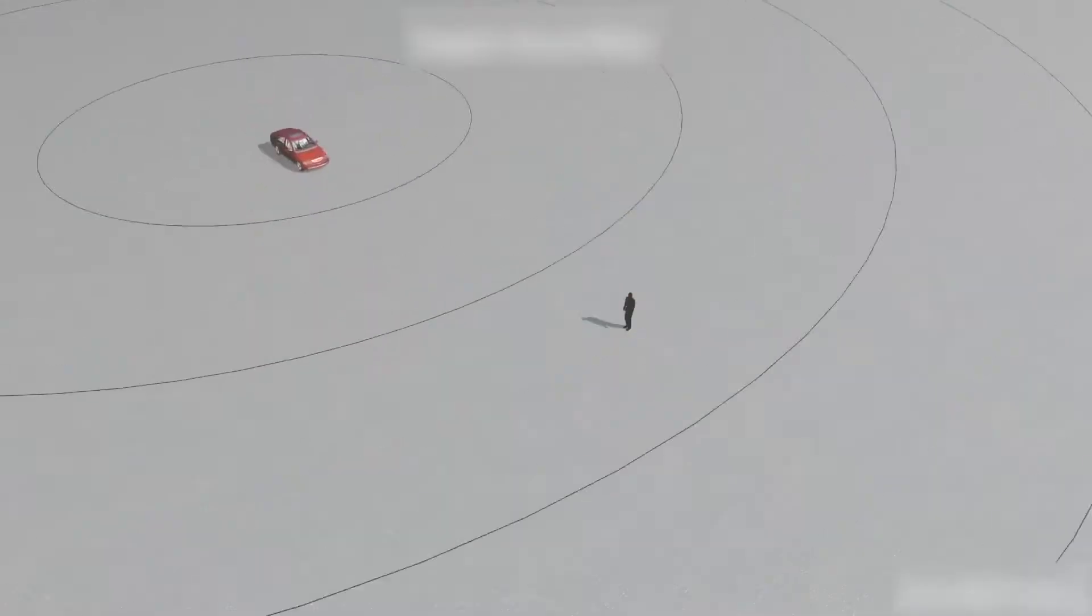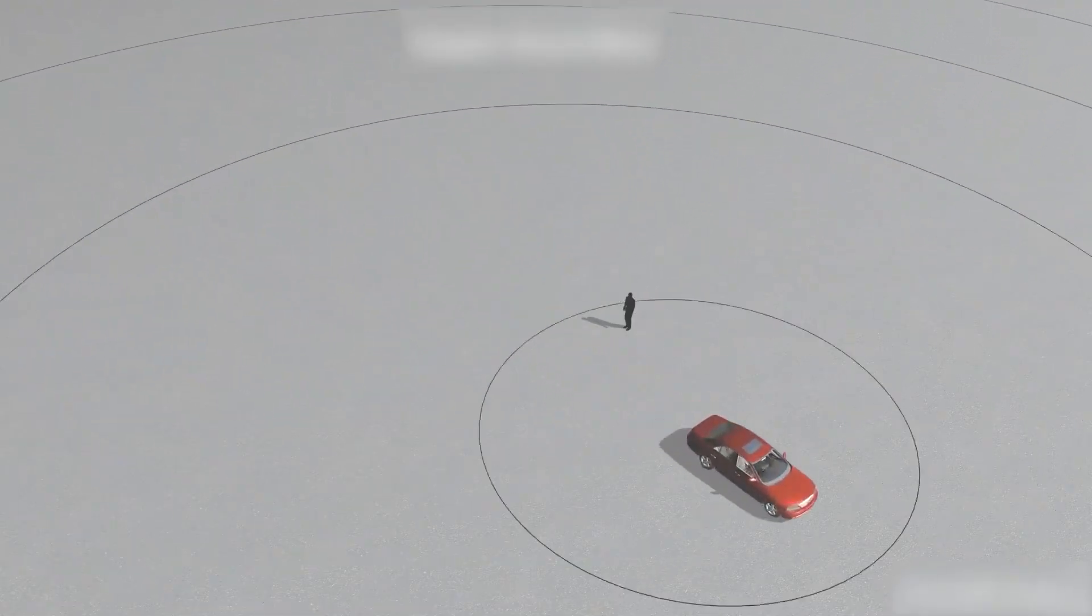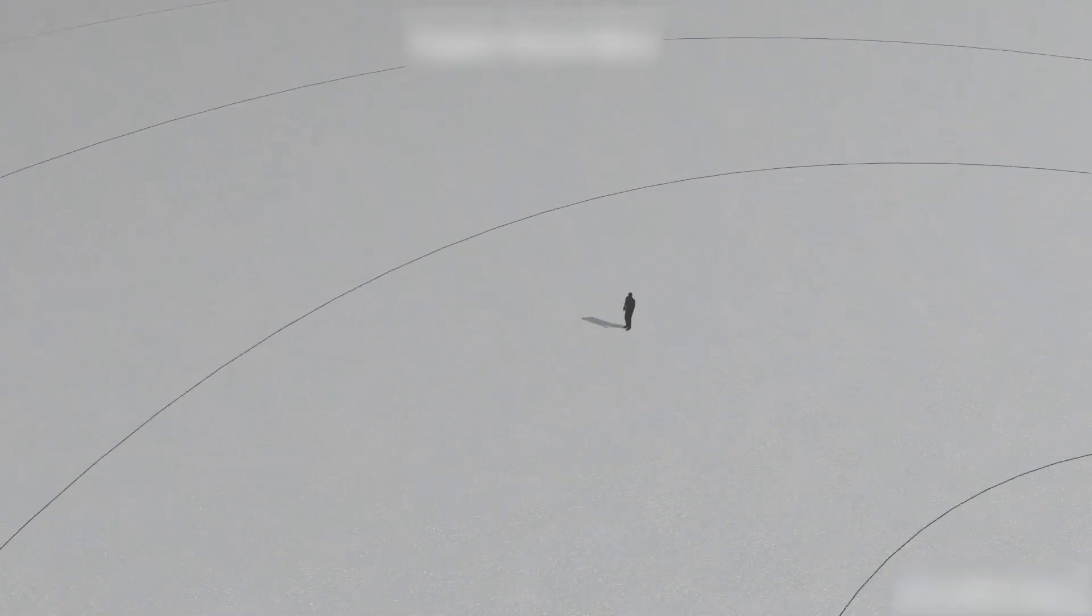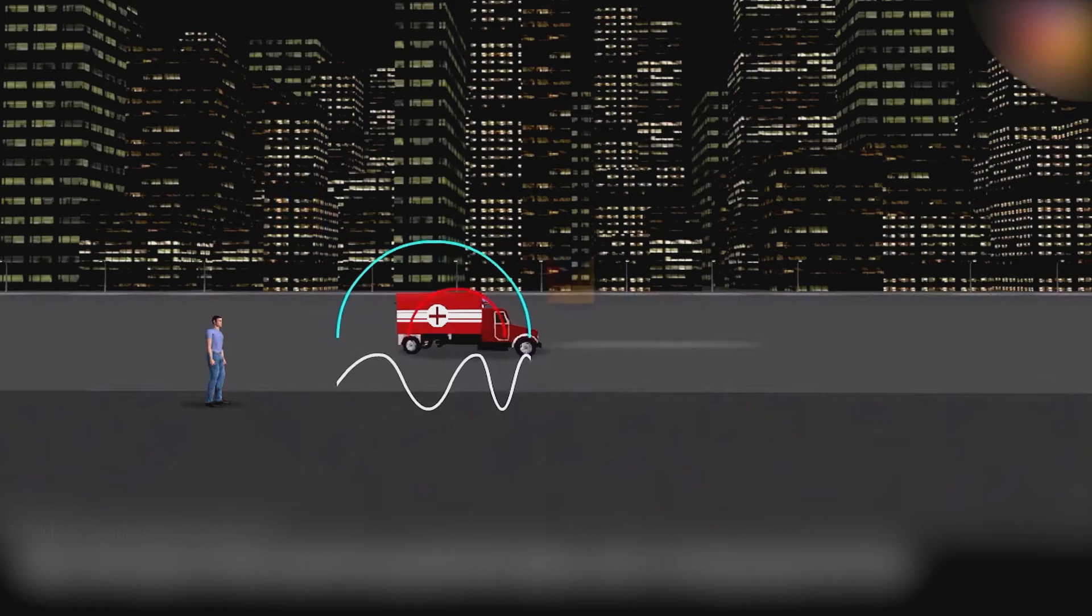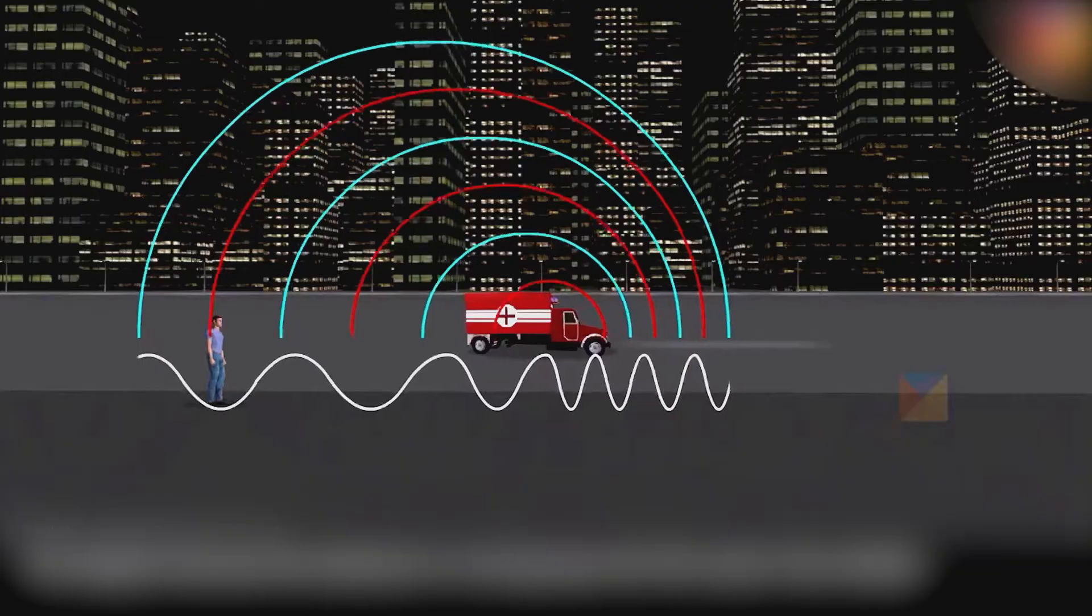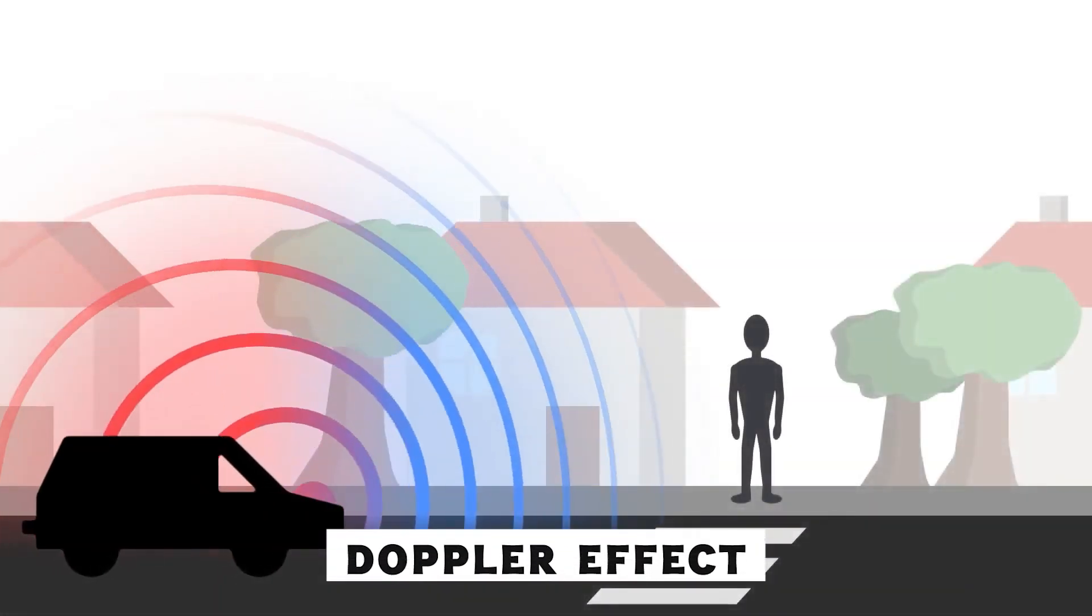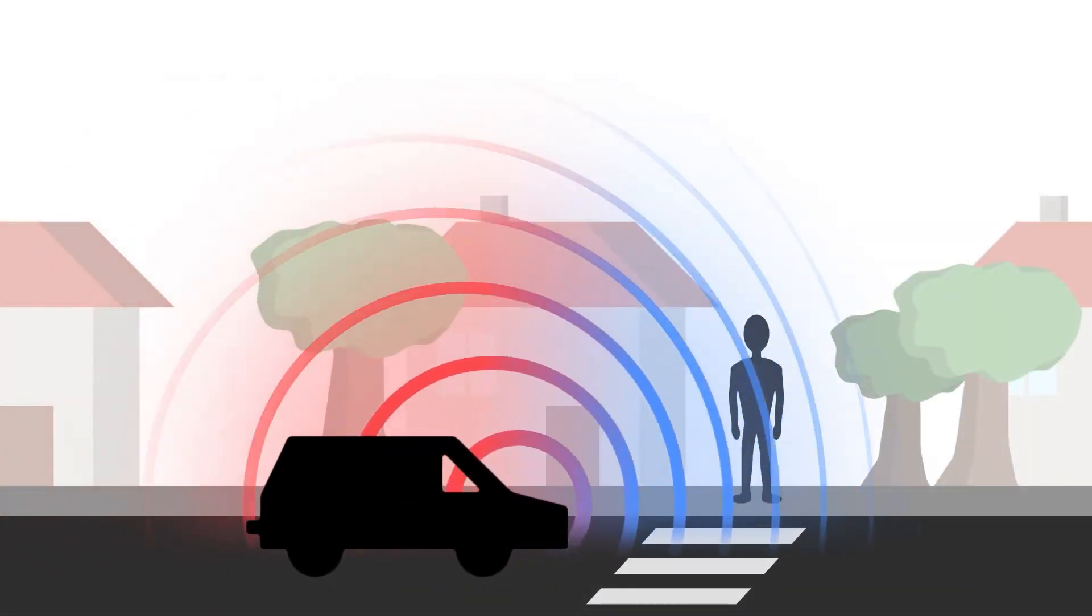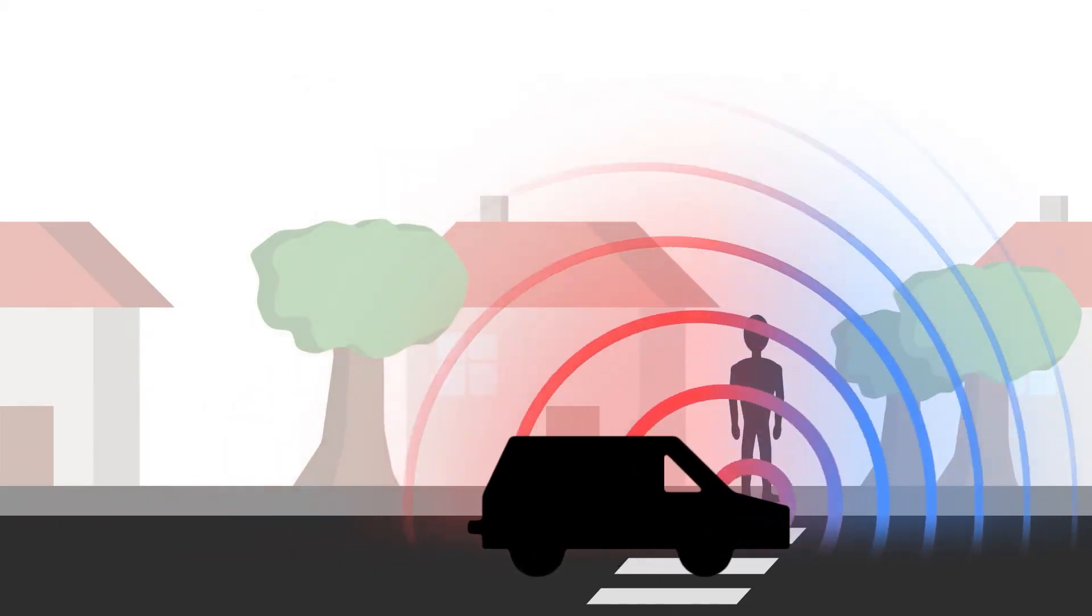When the car passes and starts to move away, the opposite happens: the sound waves are stretched out, making the pitch sound lower. The Doppler effect is what makes sirens on emergency vehicles sound like they're changing pitch. It's also used in radar, sonar, and medical imaging.